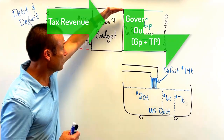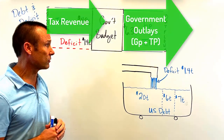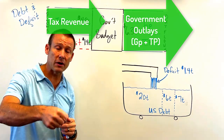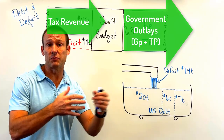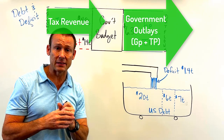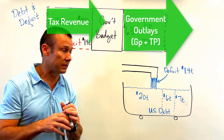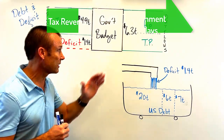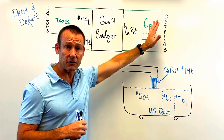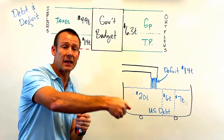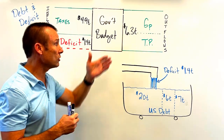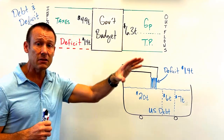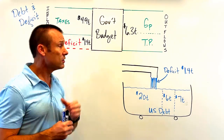If we have that shortfall, the U.S. Treasury Department — part of the executive branch — is obligated to go borrow money to finance that deficit, because these are obligations we have to pay in the present. They have been legislated. Certainly we can change these things in the future.